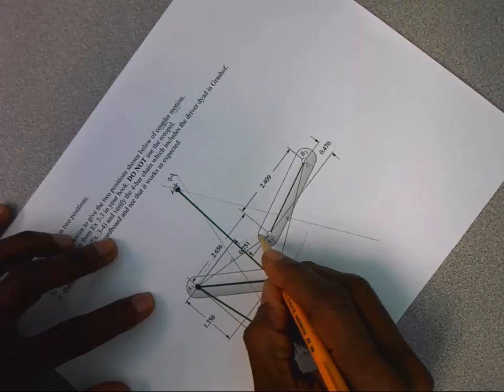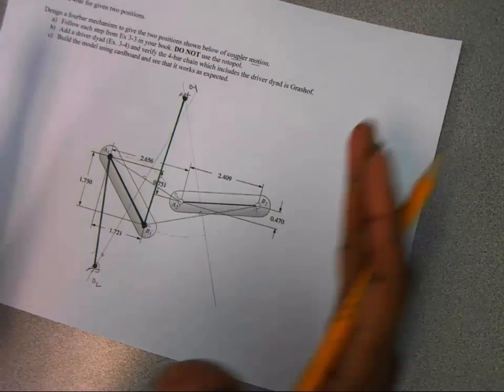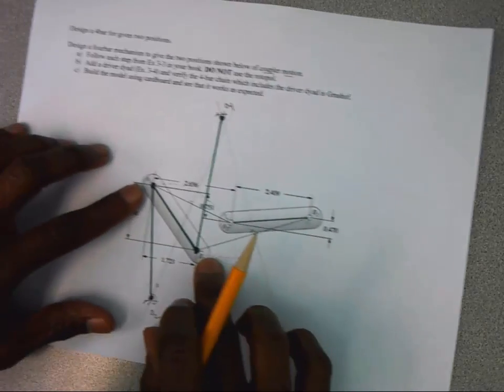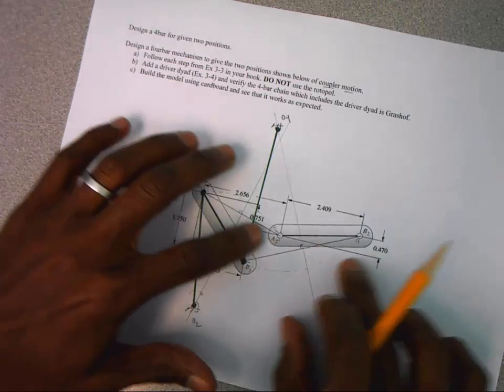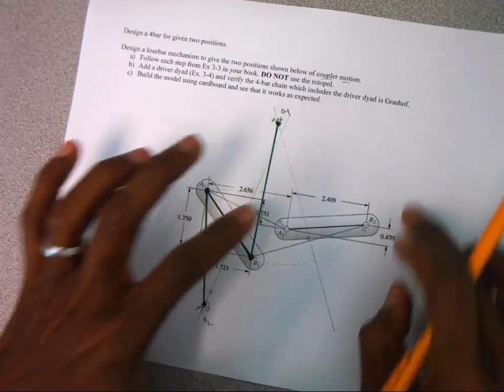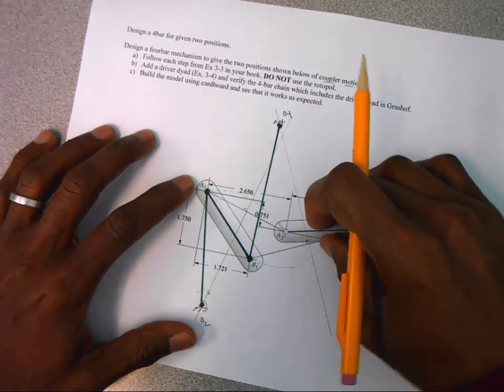And B1 to kind of follow this path and end up at B2. So I'm just going to draw where A1 is headed. It's going to end up over here. And so that's going to happen. But what we want to do is we want to kind of bound the motion. So we don't want this link to go further in that direction or to go further past the second position. We want the coupler to come to here, stop, and go back.